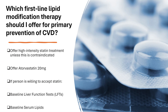The question is which first-line lipid modification therapy should be offered for primary prevention of cardiovascular disease. In this scenario, you would offer a high-intensity statin treatment unless it is contraindicated. You can check contraindications in the BNF or SPC of the medications. For primary prevention, we would offer atorvastatin 20 milligram — it is the first line in NICE guidance. Different countries have different guidelines; in the United Kingdom we use NICE guidelines.